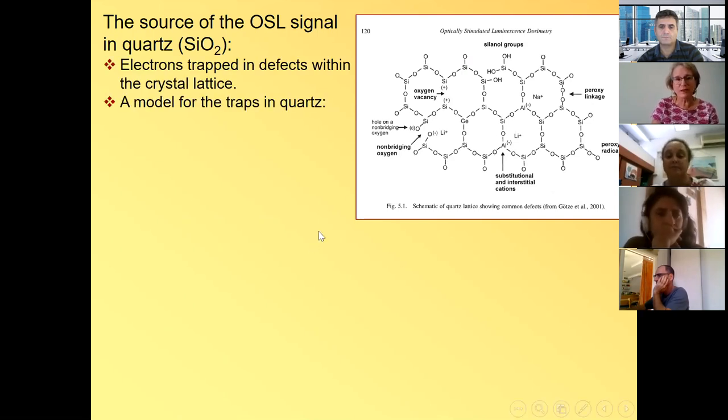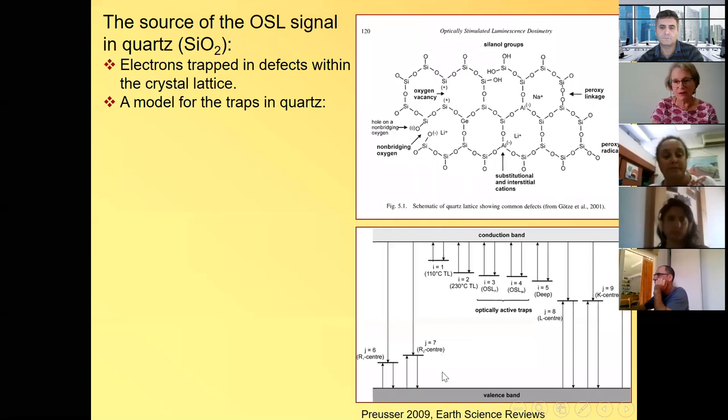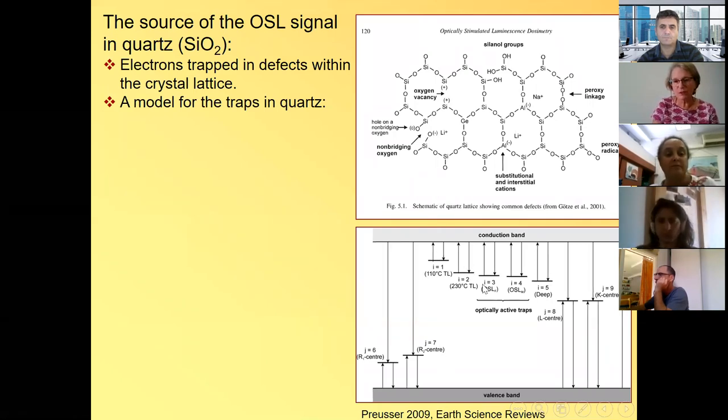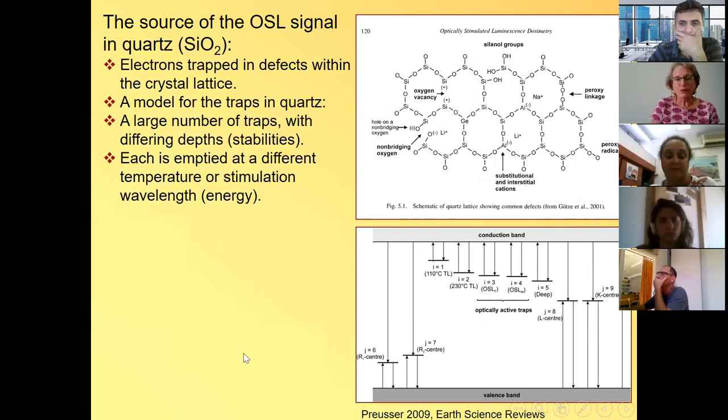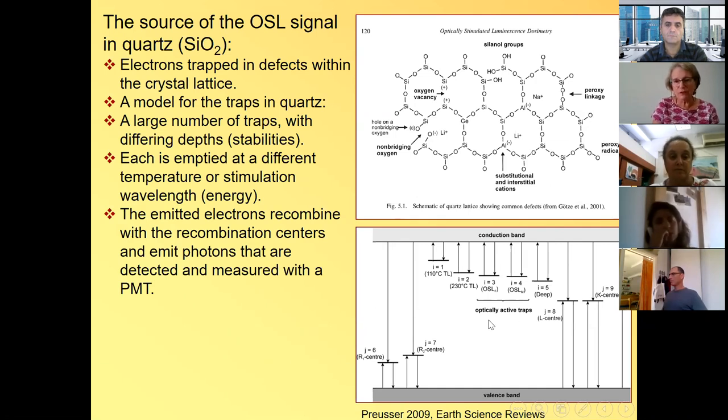So each one of these defects create a trap for electrons, which can stay there for a long time. So the electrons can be trapped in these defects. And this is the model. And if we look at the energy-wise, if we look at the energy that is needed to keep these electrons in place, we have all kinds of traps. Each trap has its own energy depth. This is a scale of energy. So some traps are shallow, some are deeper, and we're interested in these two traps, which are responsive to light. And then you have even these deeper traps. And when each trap will be emptied, so the electrons will be discharged at different temperatures or stimulation wavelengths.